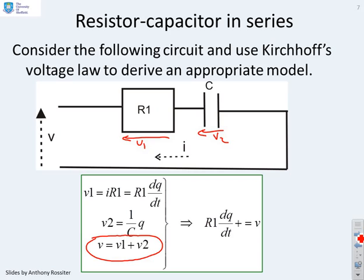I can write down what V1 and V2 are. V1 is the current times R1, or R1 dQ/dt, where Q represents the charge. And V2 is Q over C. I can combine those together. I get R1 Q dot plus Q over C equals V. There's my model for a resistor-capacitor in series.